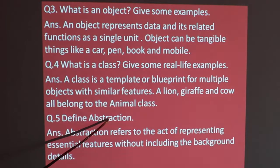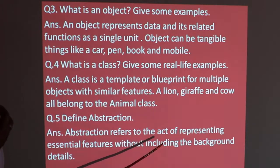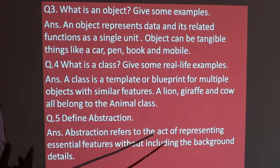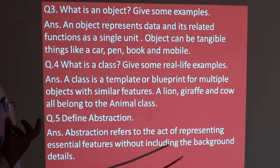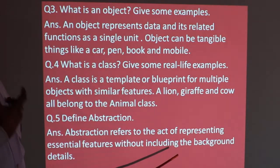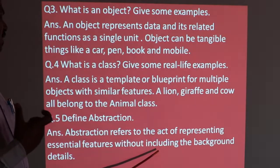Define abstraction. Abstraction refers to the act of representing essential features without including background details. Essential features will be displayed and the rest of the details and background details will be hidden. For example, if we talk about mobile, touchscreen and buttons are essential features that the operator can use. Other components like battery, circuit board, software are hidden inside the frame and case.